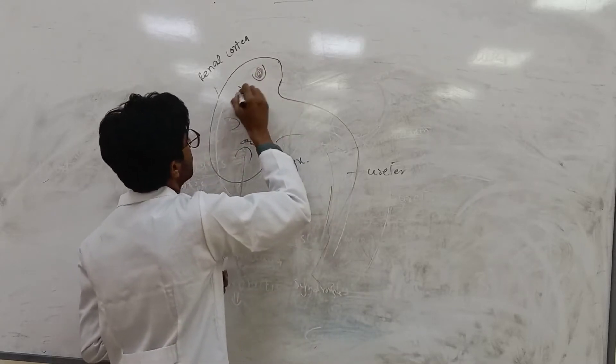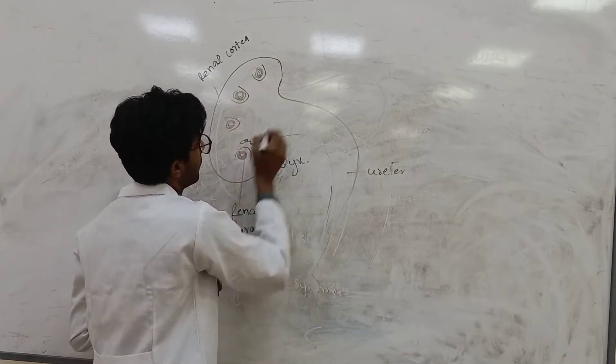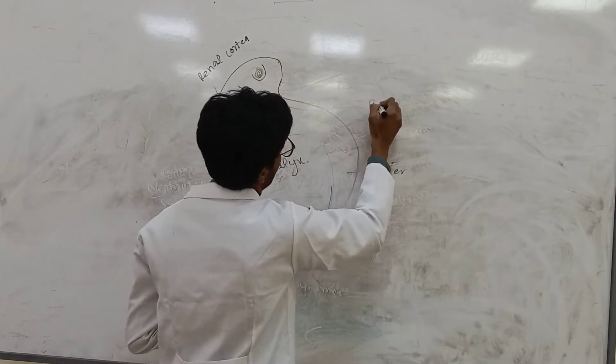In this side, there is renal artery and vein.